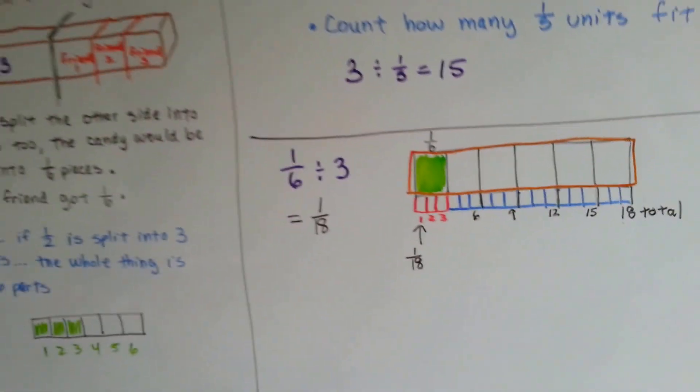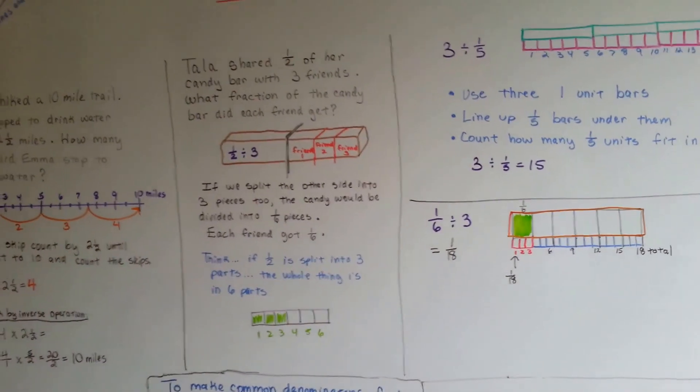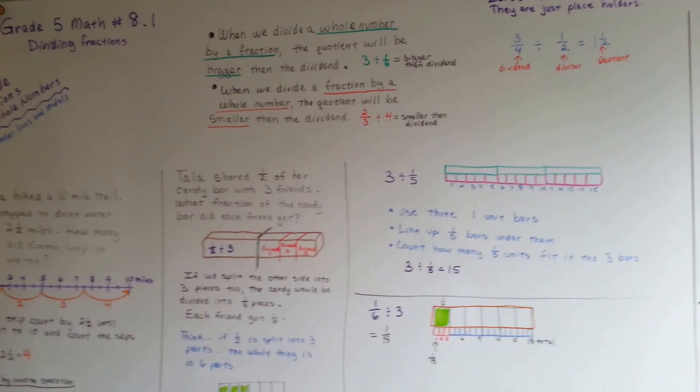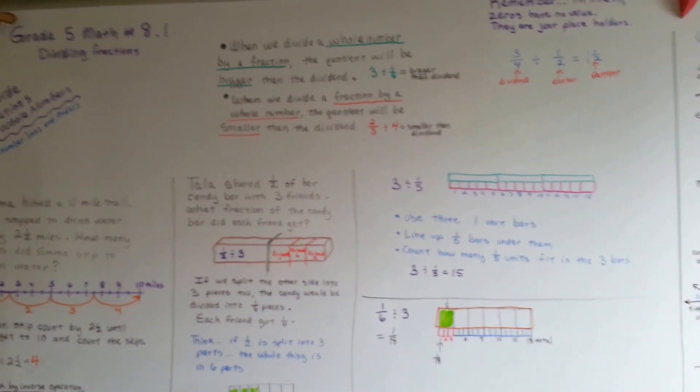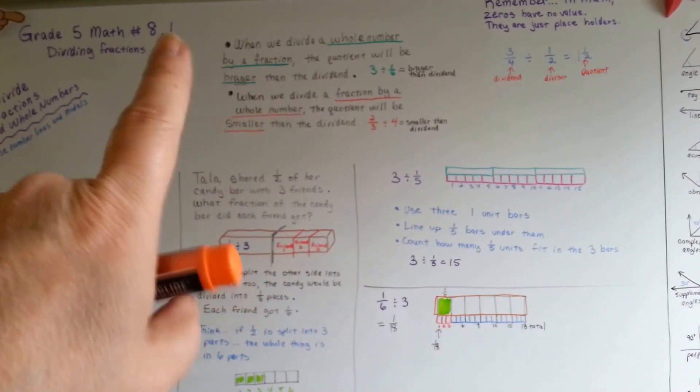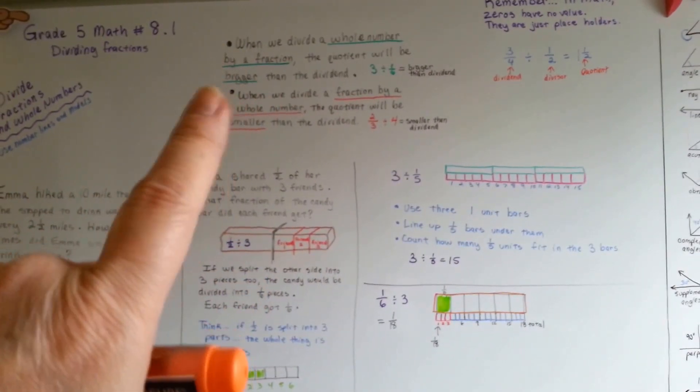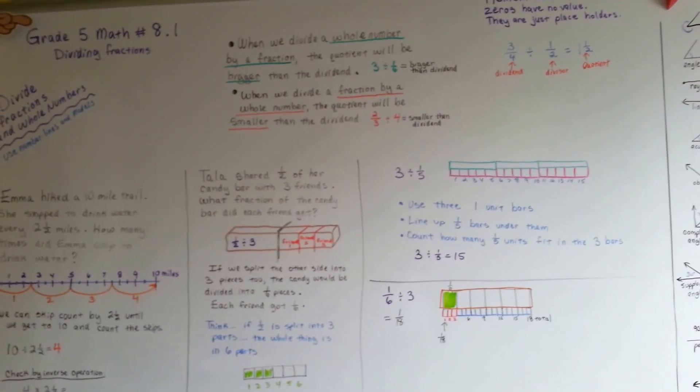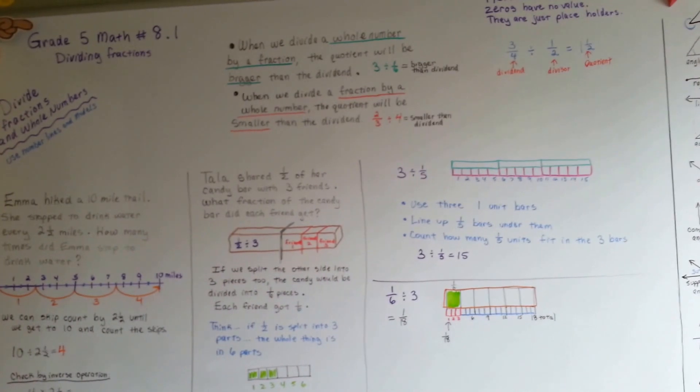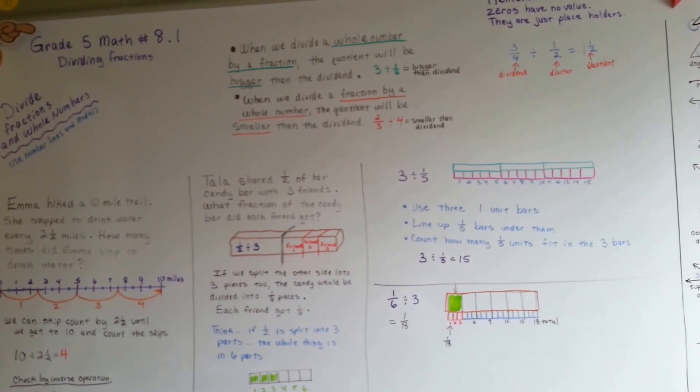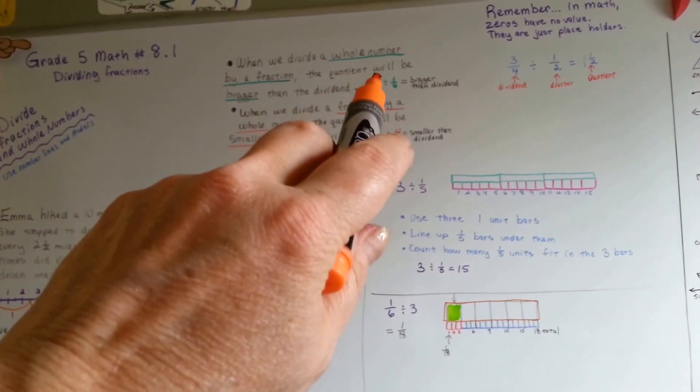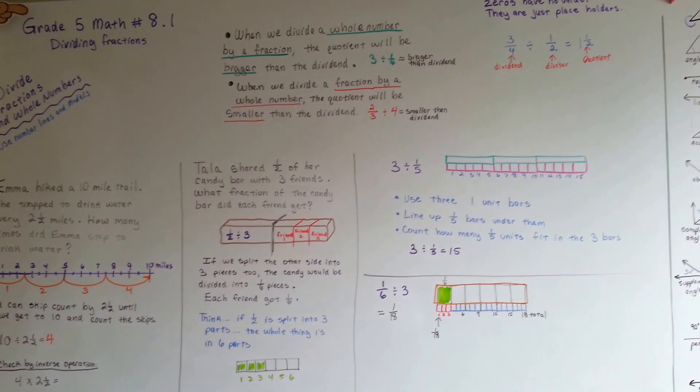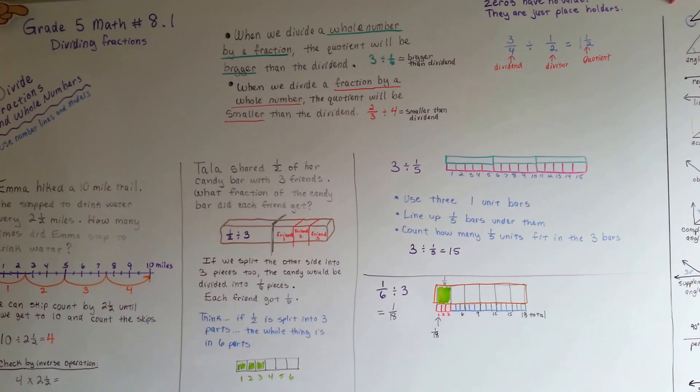So that's how we can use number lines and models to help us divide fractions and whole numbers. Remember this rule because it'll help you in case you make a mistake on a test or homework. When the whole number is first, then the quotient's going to be bigger than the whole number. If the fraction is first, then the quotient's going to be smaller than the fraction. I'll see you next video. Bye!